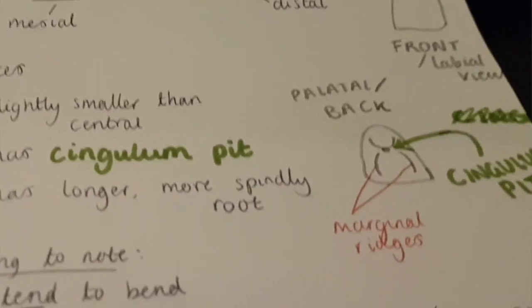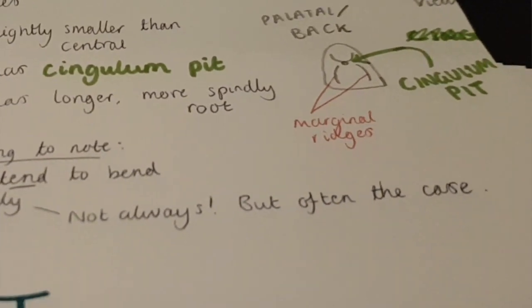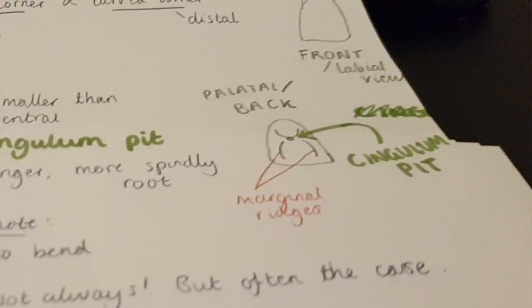For the palatal view we have the cingulum again, followed by the scoop, and in between we have a little cingulum pit, which I think can be used for various dental treatments — it is significant clinically, although I can't recall exactly what for right now. If you know what the cingulum pit is used for in clinical practice, please let me know in the comments. Last thing to note: roots tend to bend distally. This is very common across most teeth, not always the case but worth bearing in mind. That's the upper incisors done.